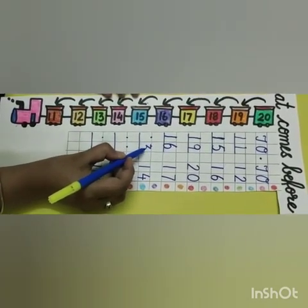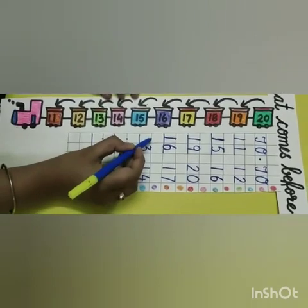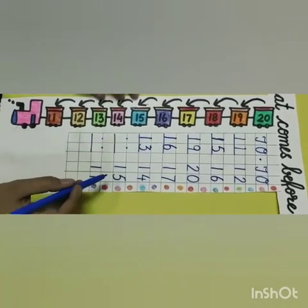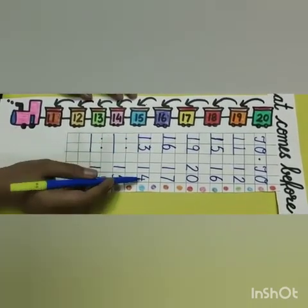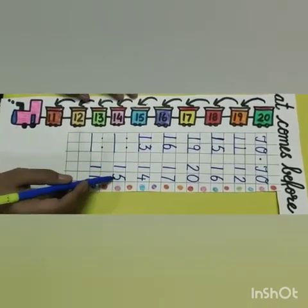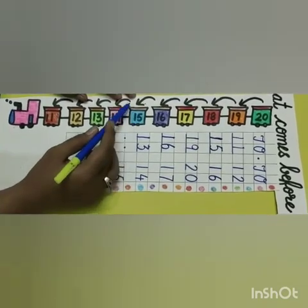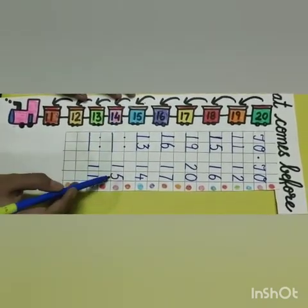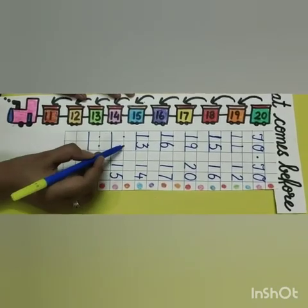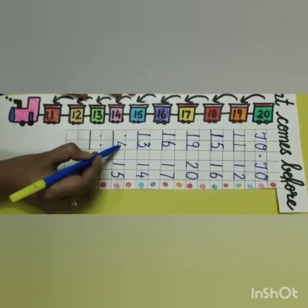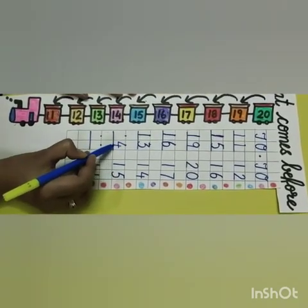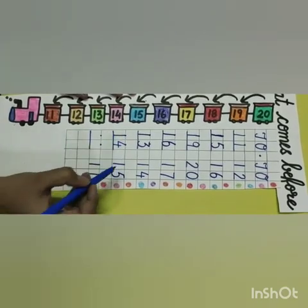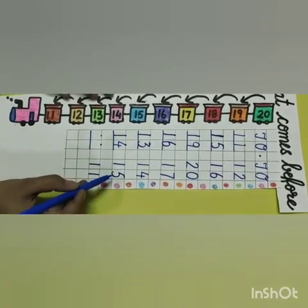What comes before 4? That is 3. 1 will remain the same. So 13 comes before 14. Tell me, what comes before 15? 14. What comes before 5? That is 4. 1 will remain the same. So 14 comes before 15.